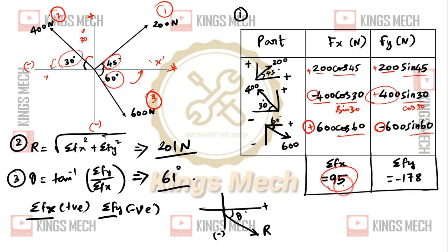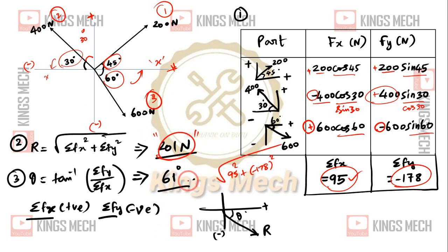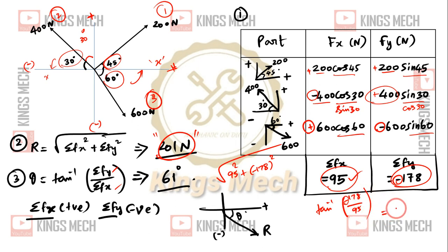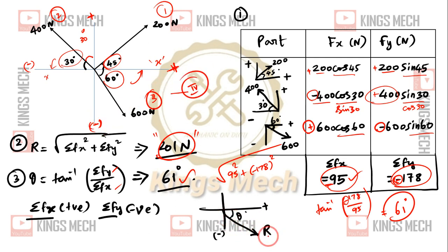The summation value is 95 for x, and minus 178 for y. Taking the square root, we get 201N. Then, theta equals tan inverse of (178 divided by 95) — the value is positive. Since summation Fx is positive and summation Fy is negative, that places the result in the fourth quadrant. This is your resultant and this is your theta with respect to the x-axis.